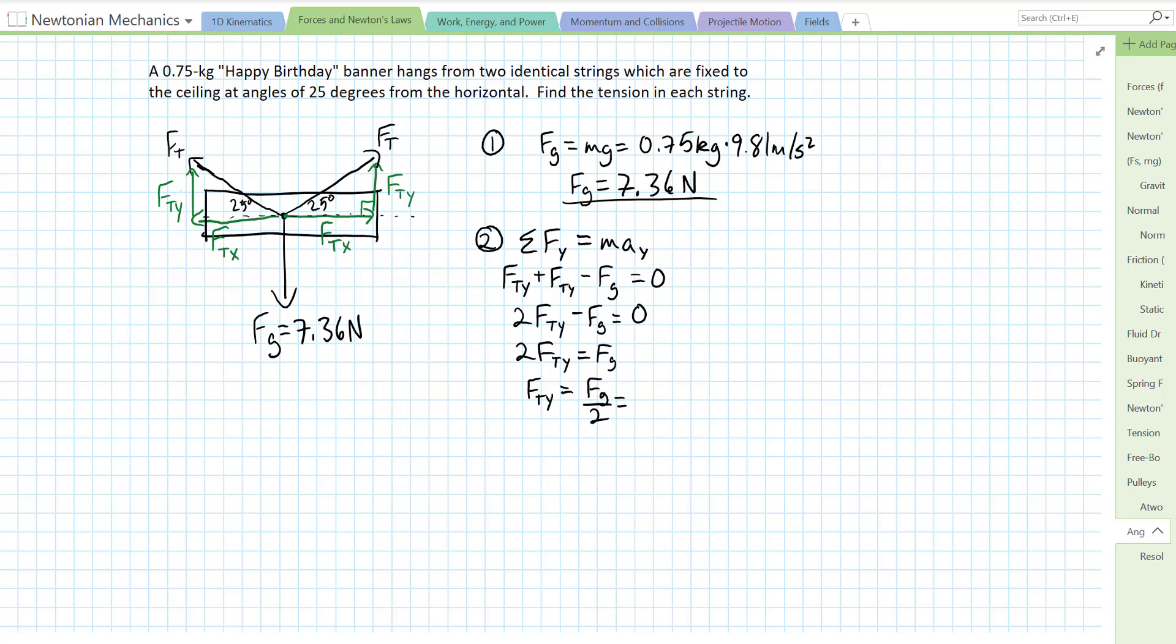7.36 over 2 equals 3.68 Newtons. So that's Fty. So that's going to give us what we need in order to solve the rest of this problem. Fty equals 3.68 Newtons. That's actually going to be both of these Ftys: 3.68 Newtons, 3.68 Newtons.